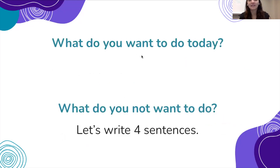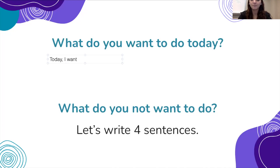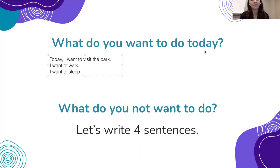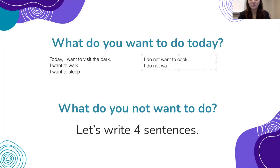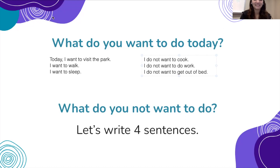Now practice: 'what do you want to do today and what do you not want to do?' Go ahead and write out some example sentences. Some examples: 'today I want to visit the park,' 'I want to walk,' 'I want to sleep.' For what you do not want to do: 'I do not want to cook — I'm tired,' 'I do not want to do work,' 'I do not want to get out of bed.' We are practicing with the construction 'do not' plus the verb.